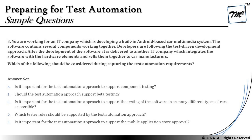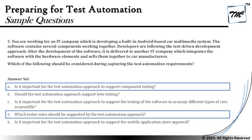Since there are five options and we need to select two correct answers, the right answers are: A — is it important for the test automation approach to support component testing, and D — which tester roles should be supported by the test automation approach. There are key criteria that highlight the right answer for a given scenario. That's all for this tutorial. Feel free to comment below with any questions — I'm always there to address them. Keep learning, keep exploring, and happy learning!